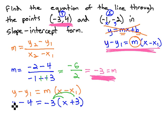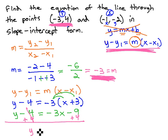We can do this by distributing through the parentheses, giving us y minus 4 equals negative 3x minus 9, and isolating the y by adding 4 to both sides. We now have y equals negative 3x minus 5, and we're now in slope-intercept form.